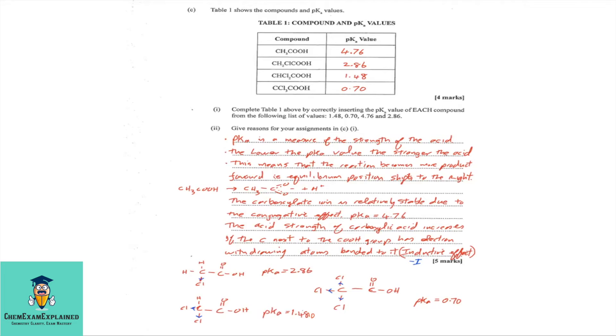But if you flip that now and use pKa instead of Ka, then it is the opposite. The lower the pKa value, the more acidic the acid, and therefore, a greater dissociation should be expected. So, looking at part C1, complete table 1 above by correctly inserting the pKa value of each compound from the following list of values, 1.48, 0.70, 4.76, and 2.86. So, starting with the weakest acid would be 4.76, then 2.86, then 1.48, and the strongest acid would have the lowest pKa of 0.70.